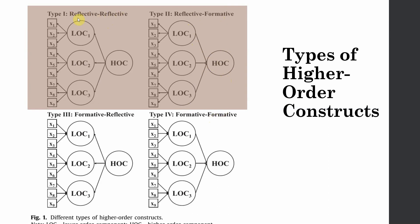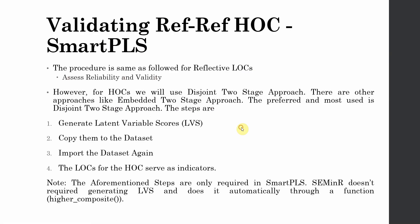In this particular session, I am going to guide you on how to validate a reflective-reflective construct, that is your internal service quality. The procedure is the same as we followed for reflective lower-order constructs — you assess reliability and validity. However, for higher-order constructs we are going to use the disjoint two-stage approach. Once you have validated the lower-order constructs, we generate scores for them. Step 1: generate latent variable scores and copy them to your dataset, then import that dataset. Your LOCs will now serve as indicators for the higher-order construct.